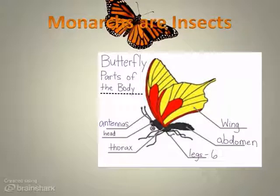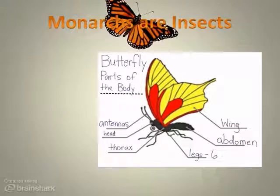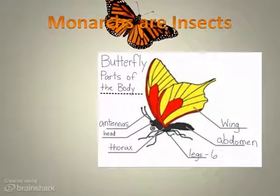Insects have specific characteristics that make them an insect. Insects like the monarch will have three body parts: the head, thorax, and abdomen. Attached to the thorax will be six legs. Some insects will also have wings attached here. The last criteria are two antennae atop the head and compound eyes. Animals must have all these characteristics to be an insect.